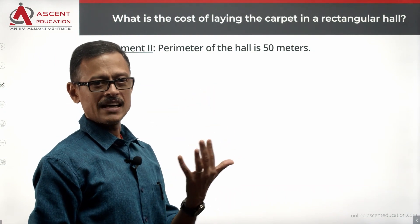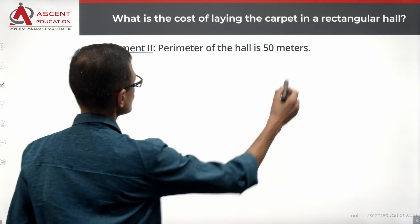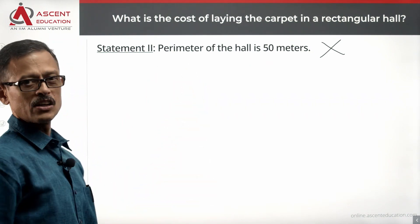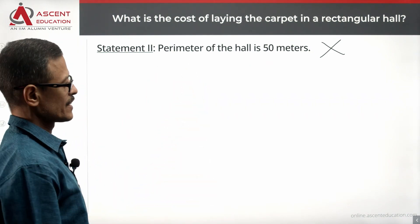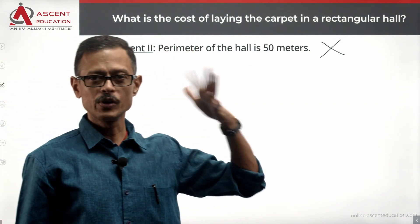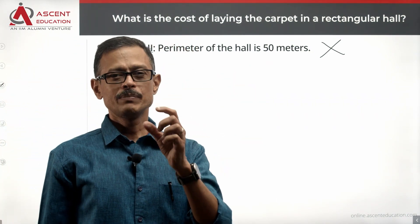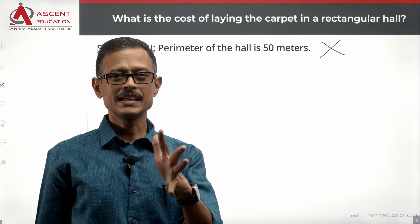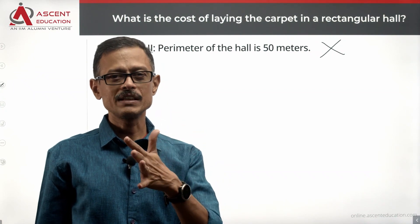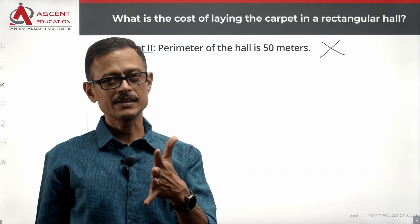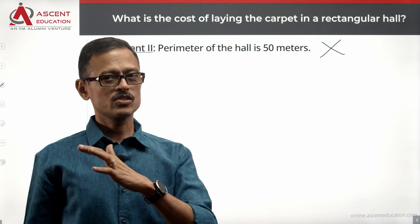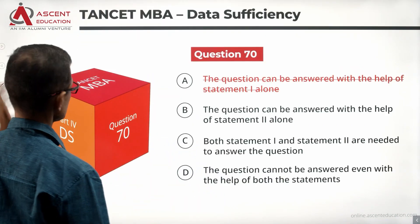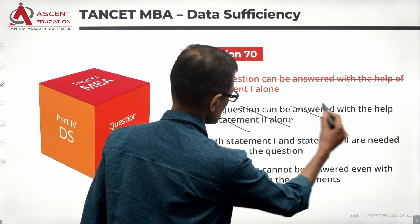Even if we know the perimeter, we would need the area to find the cost, and we don't have the cost per unit area from Statement 2. So Statement 2 alone is also not sufficient. We rule out answer option B.